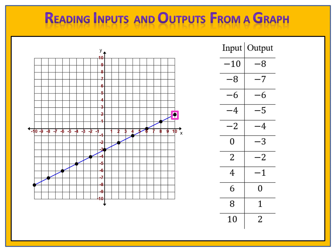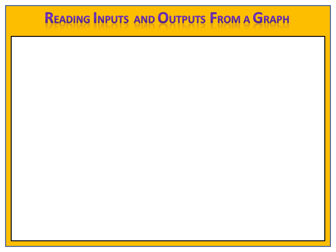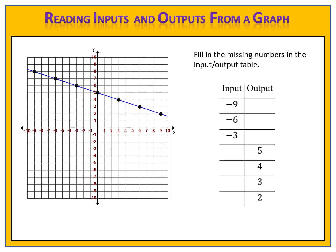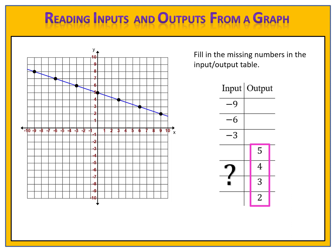Let's take a look at another example. In our second exercise, we once again have a graph, and on that graph there are points. Each point represents an input and output combination. The directions are to fill in the missing numbers in the input and output table. Notice in some cases I've given you the input and I want you to find the output. In other cases, I've given you the output and I want you to find the input. Let's work through these exercises together.